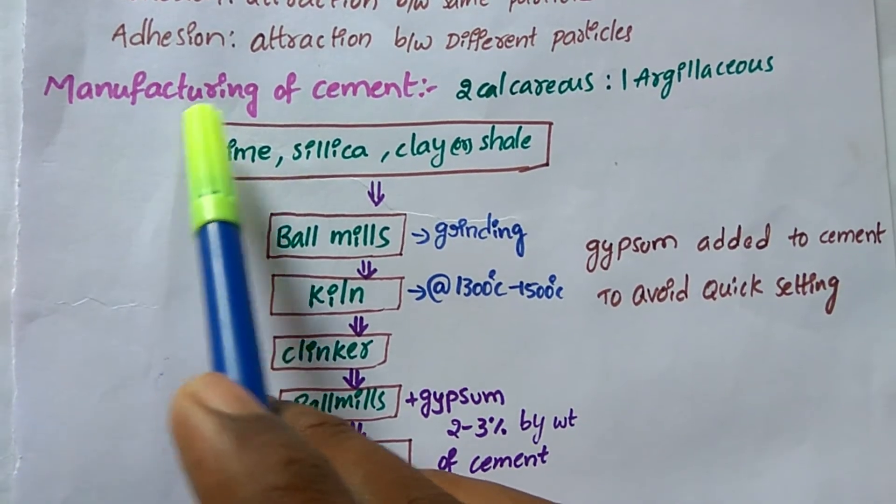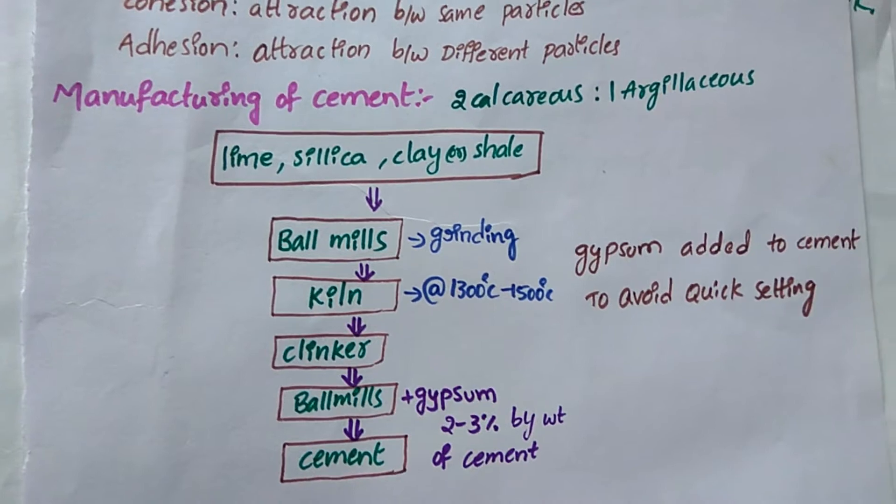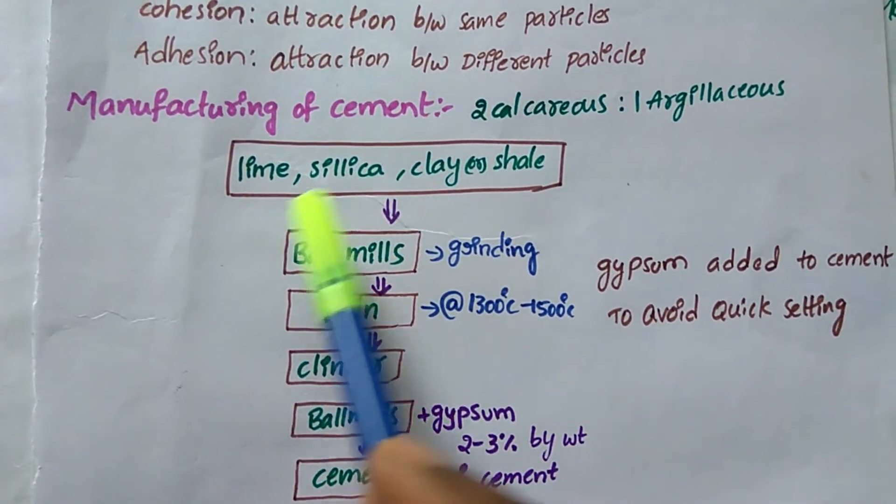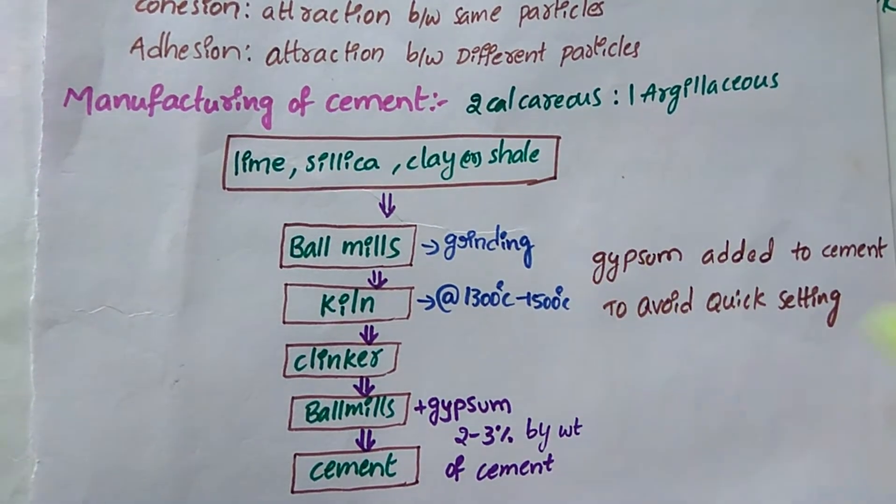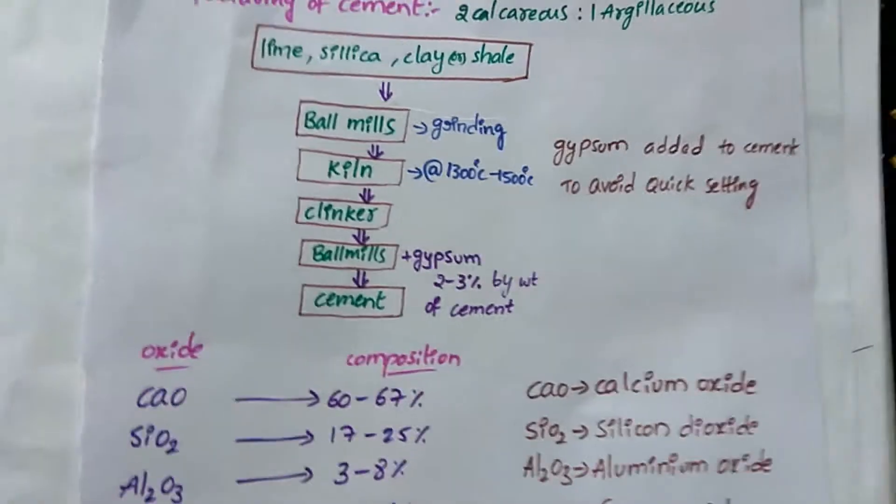Manufacturing of cement: Two calcareous and one argillaceous material—lime, silica, clay, or shale. These materials are taken